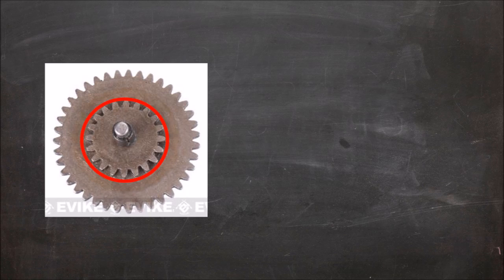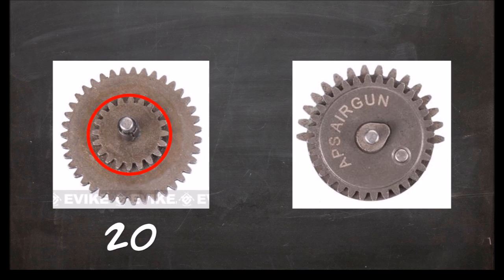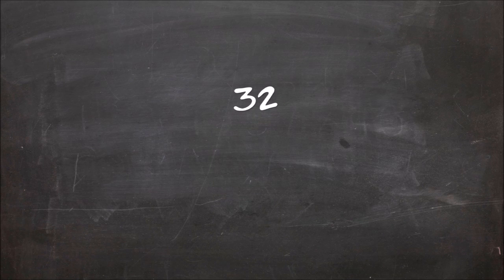Finally, there is the 20 teeth on the spur gear that contact the 32 teeth on the sector gear. This ratio is 32 to 20 or 1.6 to 1.